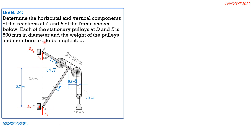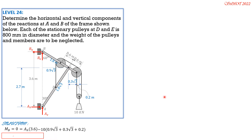Considering the entire system, setting moment at B equal to zero, counterclockwise positive: A_H times 3.6 minus 10 kN times (0.9√3 plus 0.3√3 plus 0.2) equals zero. Solving, A_H equals 6.329 kN rightward. By summation of horizontal forces on the entire system, B_H also equals 6.329 kN but leftward — no equation setup needed since they are equal and opposite.